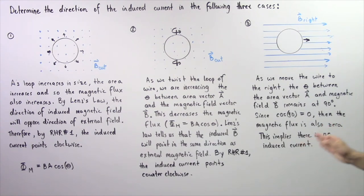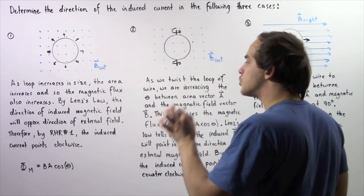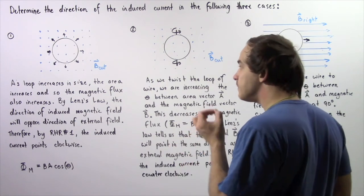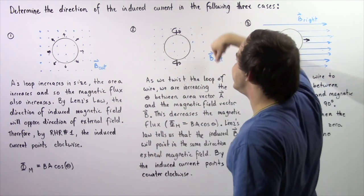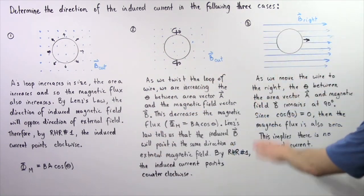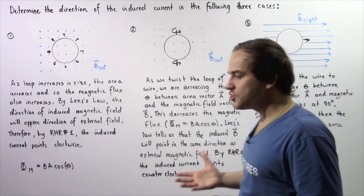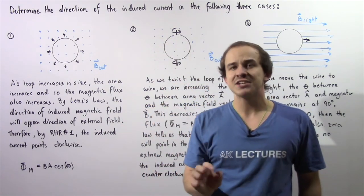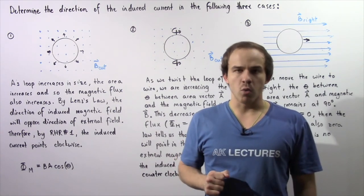So there is no induced electric current inside our loop of wire. In case one, the induced electric current points in the clockwise direction. In case two, it points in the counterclockwise direction. And in case three, there is no induced electric current because there is no change in flux. Remember, only a change in flux will induce an electric current inside our closed loop of wire.